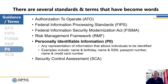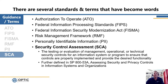PII is Personally Identifiable Information — any information that helps identify a specific individual. Examples include name, birth date, and passport number. This is the type of information we want to keep confidential to protect individuals' identities. The last term here is SCA, or Security Control Assessment. A security control assessment is actually step four of the Risk Management Framework and is used to assess the security controls of an information system or program.